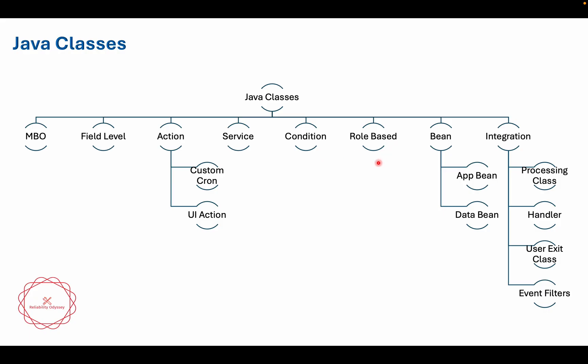Then the next type is role-based classes. These are written when you want to customize the logic for determining to whom an assignment should go. When you are creating a role and it requires more than simple if-else conditions — when you want to add more complex logic — you can create role-based classes.